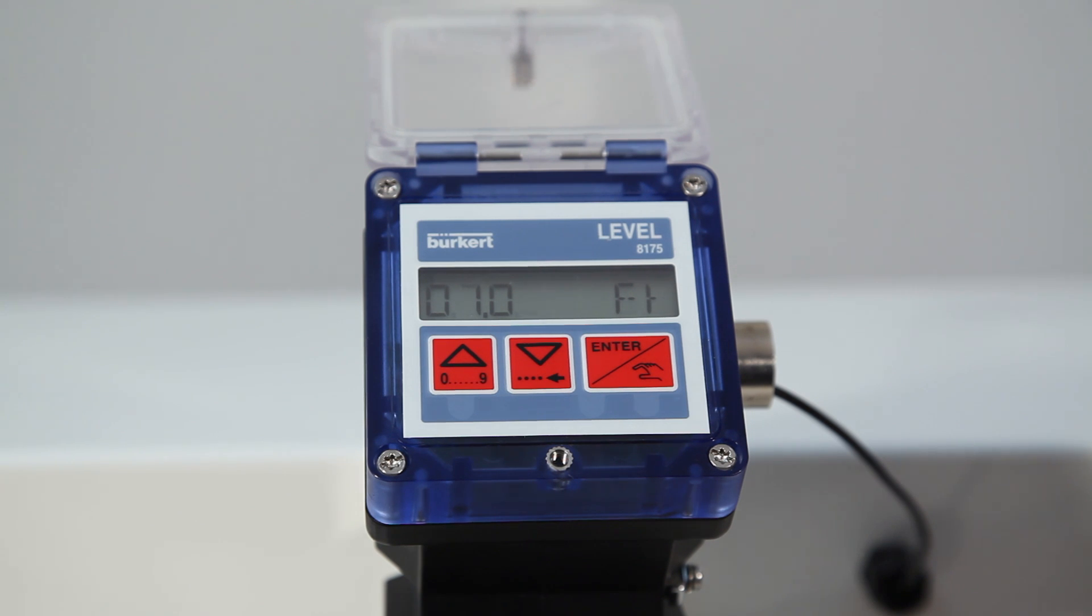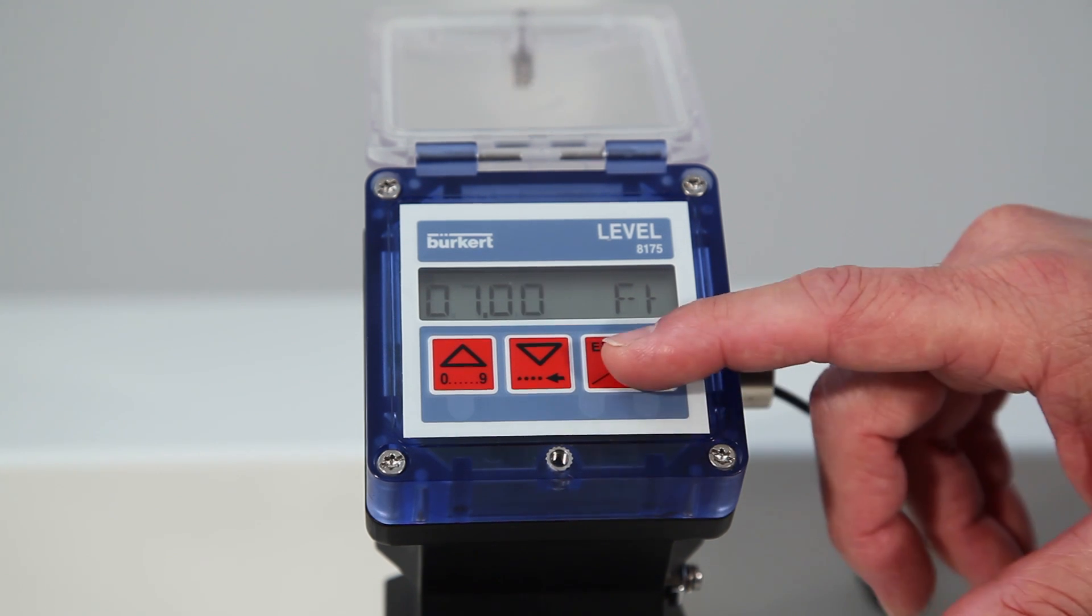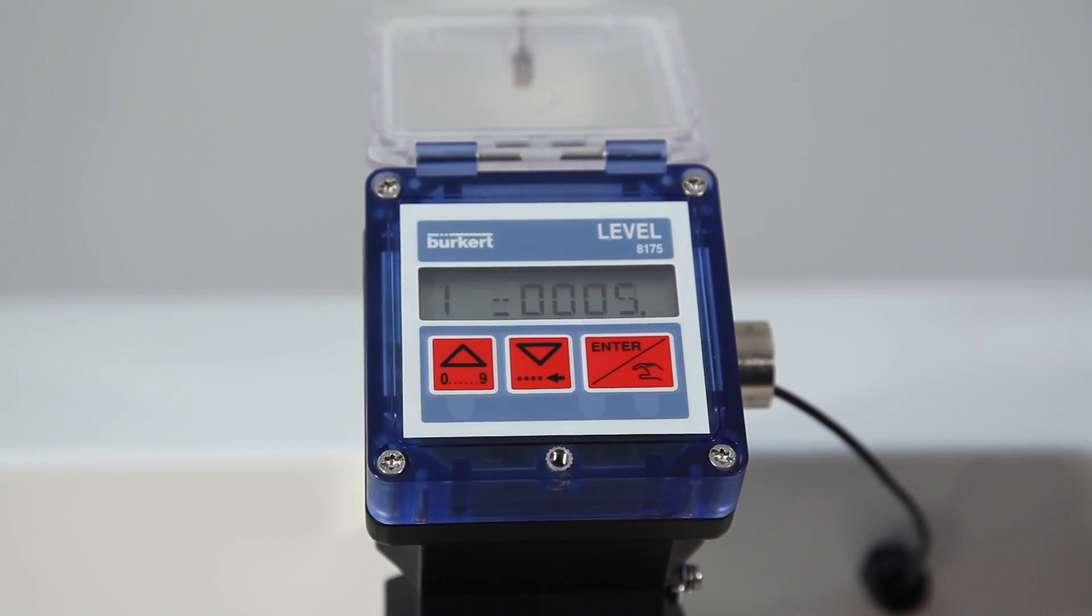What appears now is the first teach-in distance. Once you determine that distance, hit enter to confirm and what now appears is the associated volume for that first distance. In this case 5 gallons.